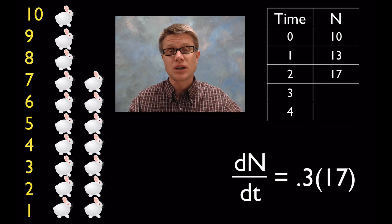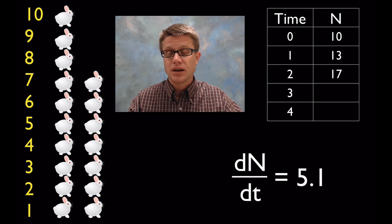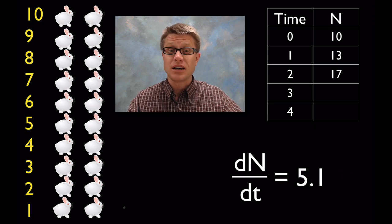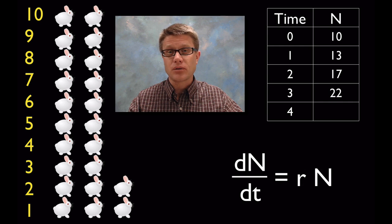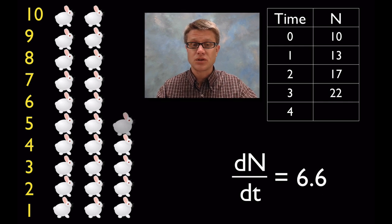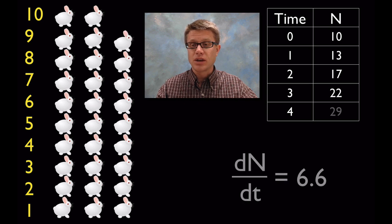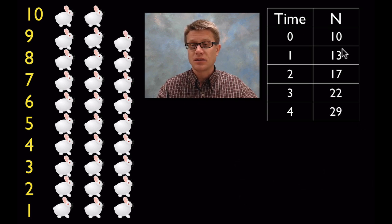So let's do generation 3. We're now taking 0.3 times 17. And I get 5.1 which is a lot like 5 rabbits. And I'm going to add those 5 rabbits. Or if we now multiply that growth rate times 22, I get 6.6 which is pretty close to 7 rabbits. So we're going to add those 7 rabbits. And so we now have got a population of 29. And so you can see that the population is increasing.